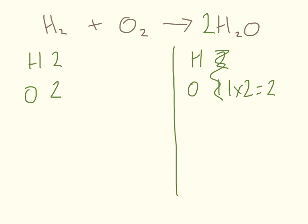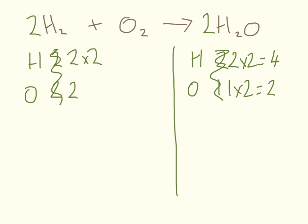I have two oxygens on the left and two on the right — oxygens are balanced. But now I have two times two equals four hydrogens on the right, and only two hydrogens on the left. So I need to increase the hydrogens on the left by putting a two in front of H₂. That gives two times two equals four hydrogens. On the left I now have four hydrogens, and on the right I have four hydrogens — balanced. And I still have two oxygens on each side — balanced as well.